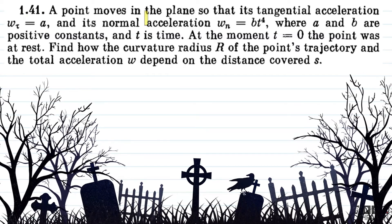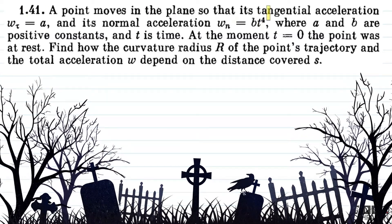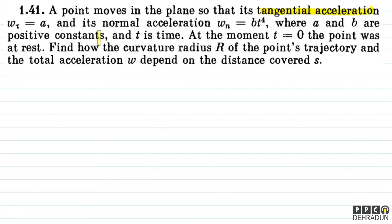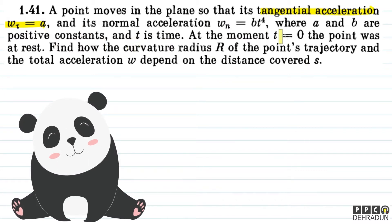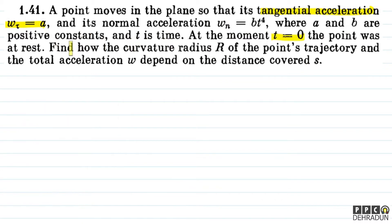The question says: a point moves in the plane so that its tangential acceleration w_τ is equal to a, and its normal acceleration w_n is equal to bt⁴, where a and b are positive constants and t is time. At the moment t = 0, the point was at rest. Find how the curvature radius R of the point's trajectory and the total acceleration w depend on the distance covered s.